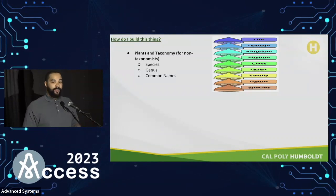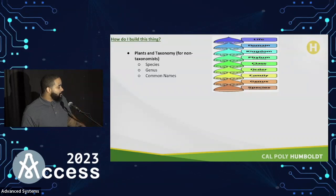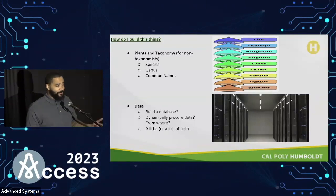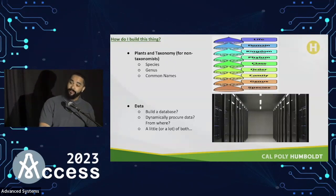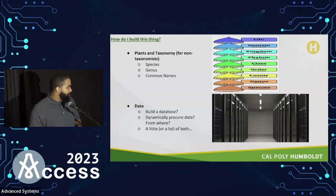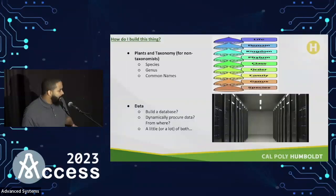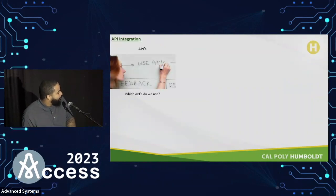That requires data. I needed access to a lot of data very quickly because this beta version was delivered in six months. The first big design question was: do I build a database? I actually ended up getting away with building the beta without a database. The next question was: can I dynamically procure this data, and if so, from where? I had no knowledge of public programs that readily offer this kind of data. It turned out the answer was a little bit of both — databasing and dynamically procuring it.